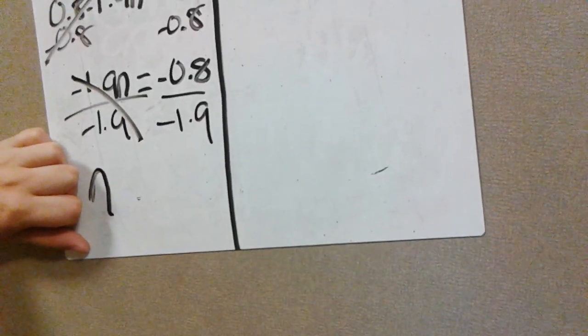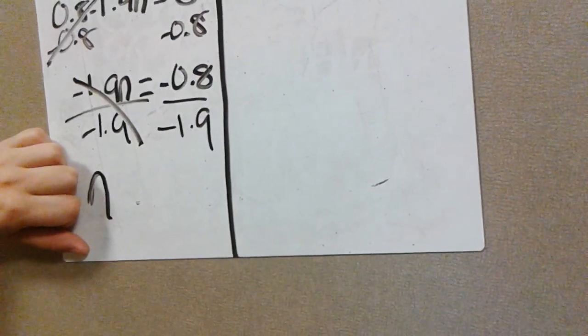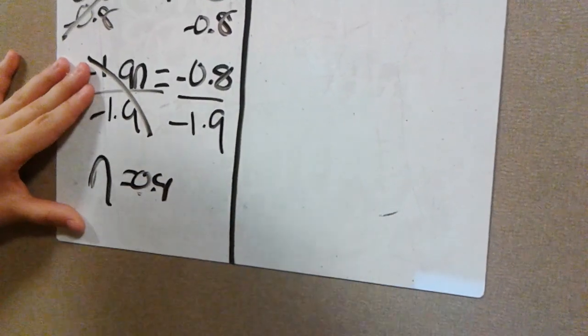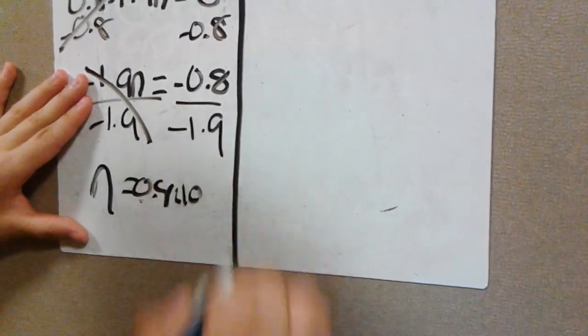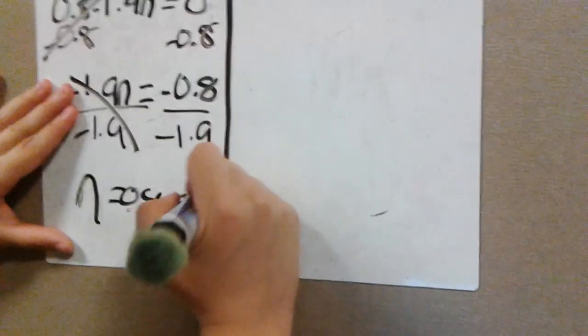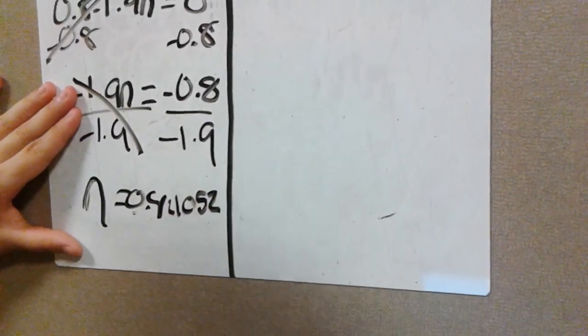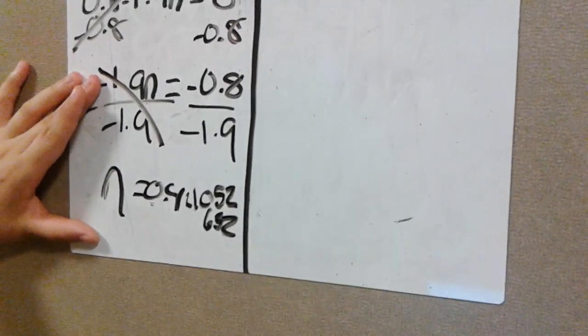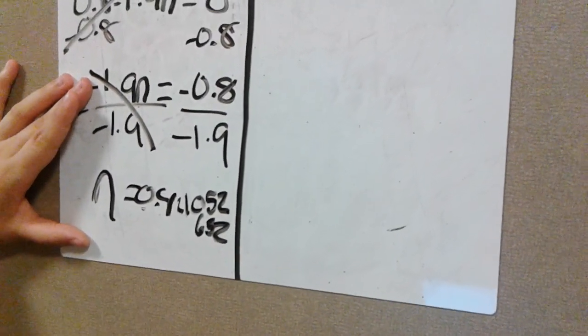And negative 0.8 divided by negative 1.9 is 0.421052632. That's a big number. That's tiny, but you know.